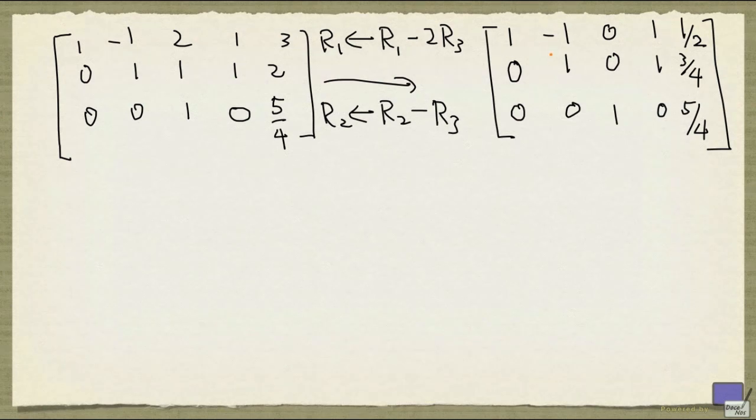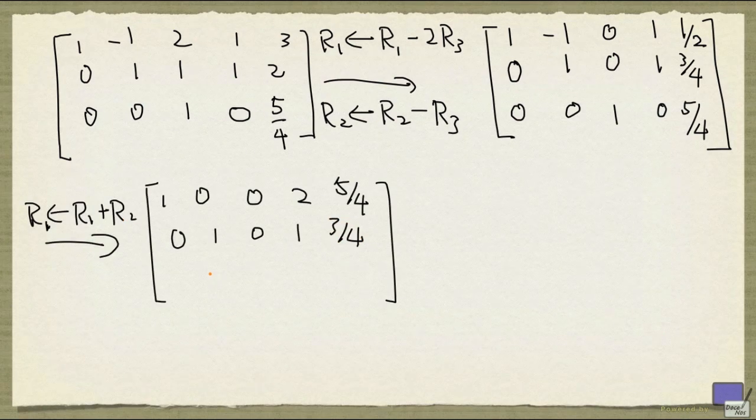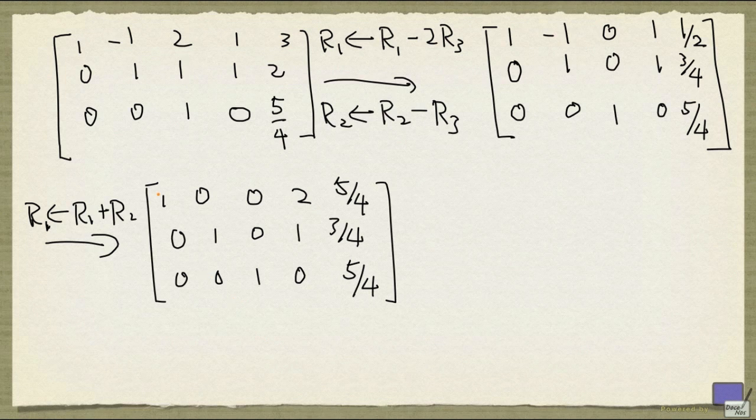And now to finish up, I'm going to add row 2 to row 1. If you look at this matrix, this is precisely the form that we want. And here, x1, x2, and x3 are the basic variables.